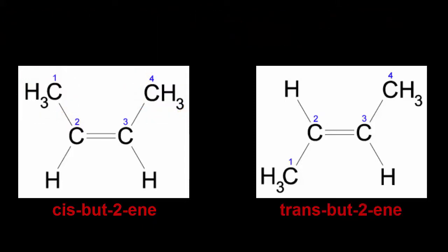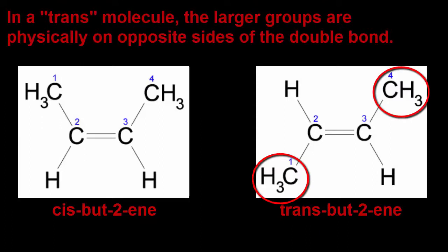Okay, trans-but-2-ene would put the larger groups, again the CH3s, on opposite sides of the double bond.